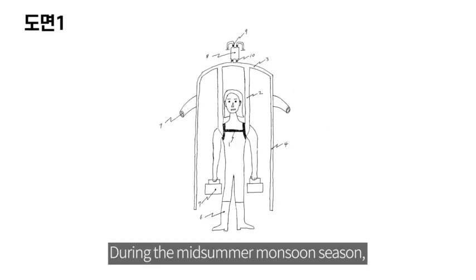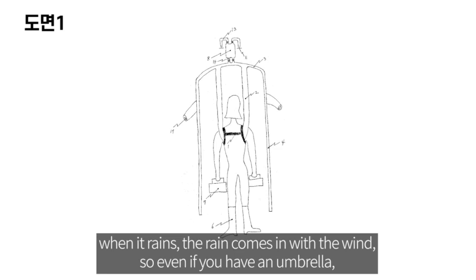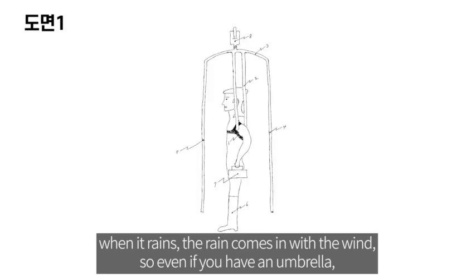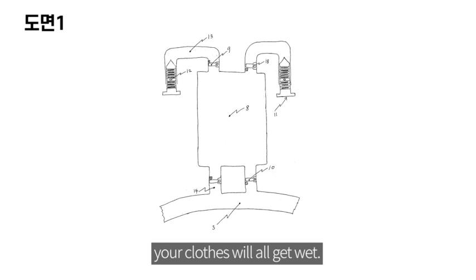3. Egg-Shaped Umbrella. During the mid-summer monsoon season, when it rains, the rain comes in with the wind, so even if you have an umbrella, your clothes will all get wet.